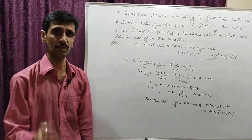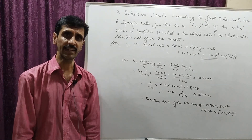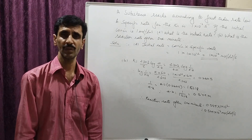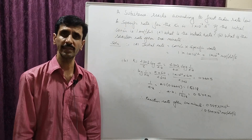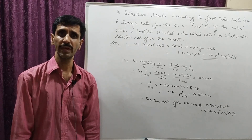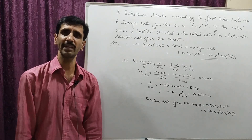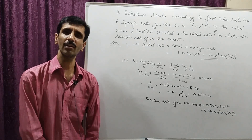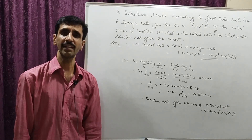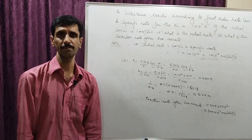For the solution, the first part is the initial rate. The formula is concentration multiplied by the specific rate. Concentration given is 1 mole per dm³ and the specific rate is 1×10⁻². Therefore the answer is 1×10⁻². The units of concentration are moles per dm³ and the units of specific rate are per second, so the unit becomes moles per dm³ per second.